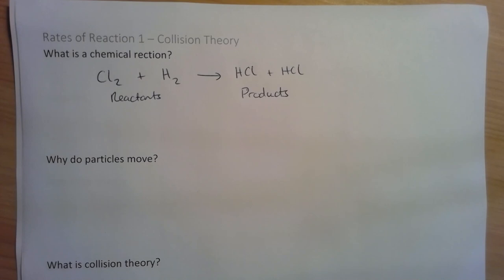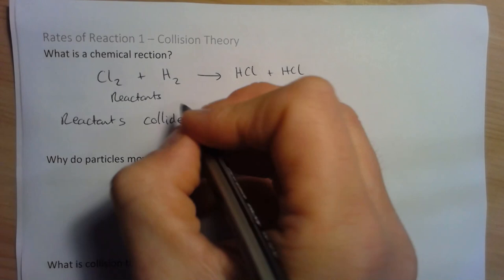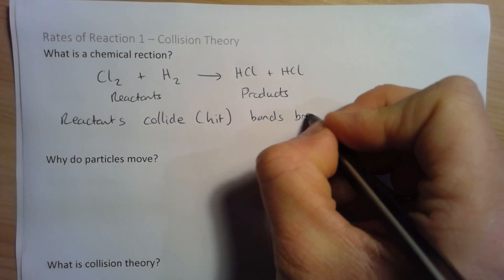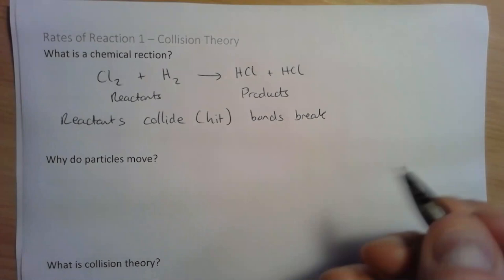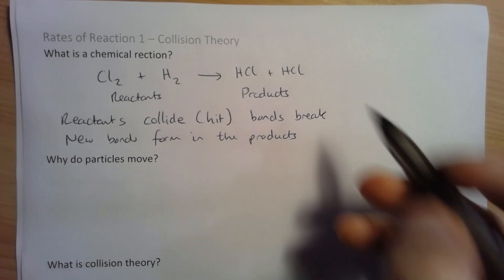What's actually happening during a chemical reaction is that the reactant molecules collide with each other. That word 'collide' means they hit each other. When they collide, the bonds in the reactants break — the bonds holding the two chlorine atoms together and the bonds holding the two hydrogen atoms together — and then new bonds form in the product.